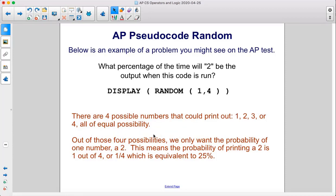Out of those four possibilities, we only want the probability of one number, a two. This means the probability of printing a two is one out of four, or one-fourth, which is equivalent to twenty-five percent.